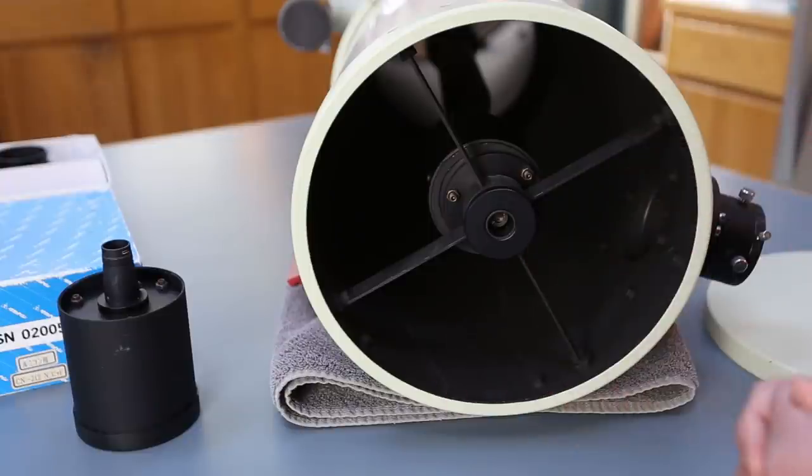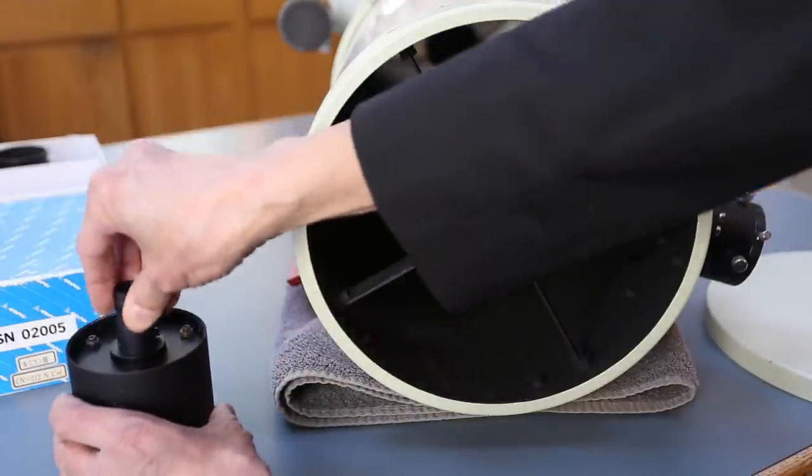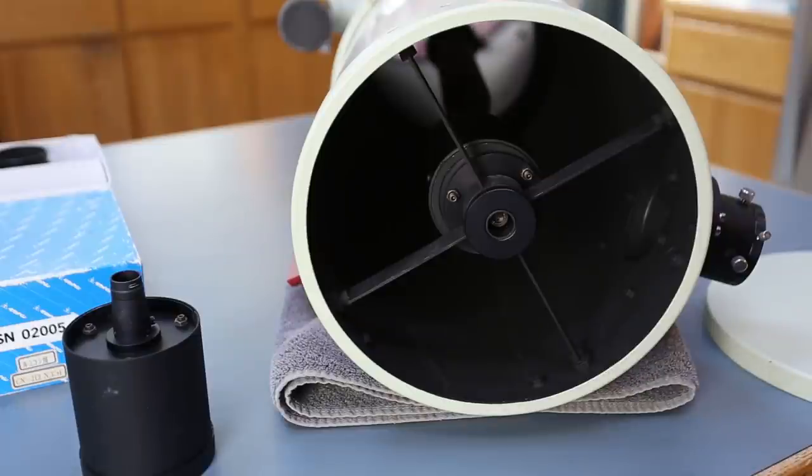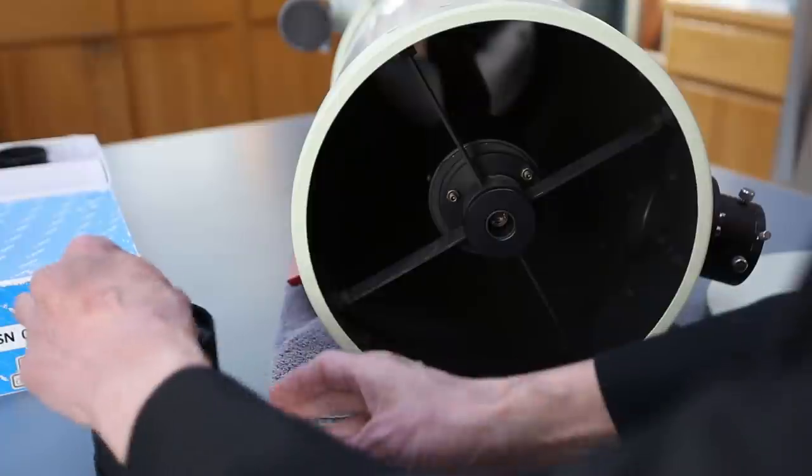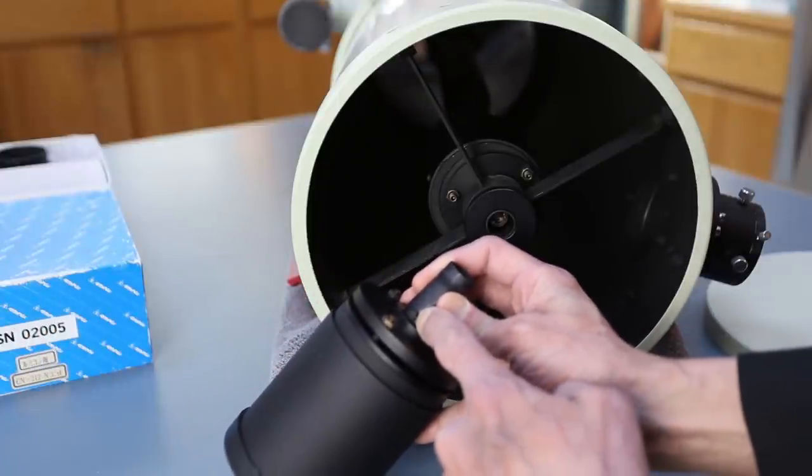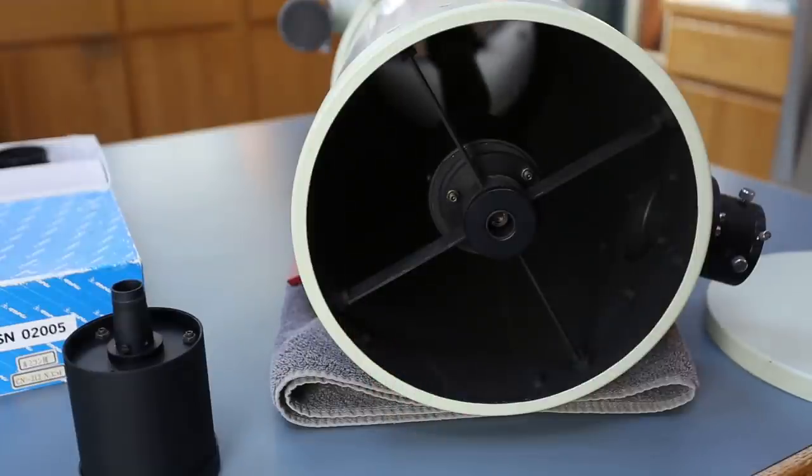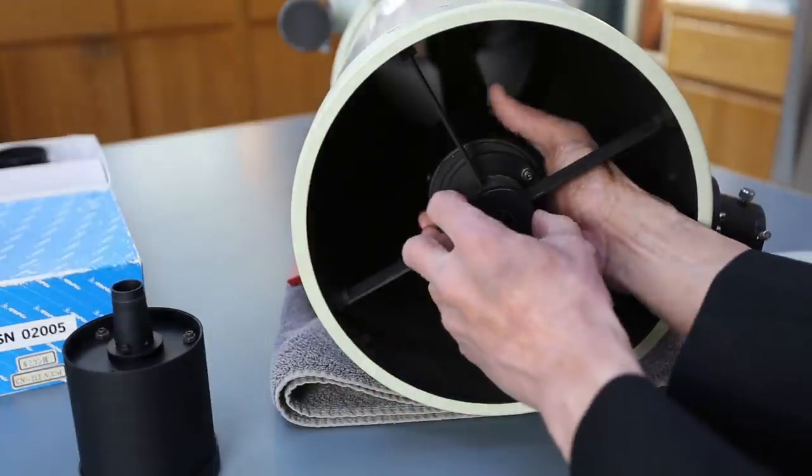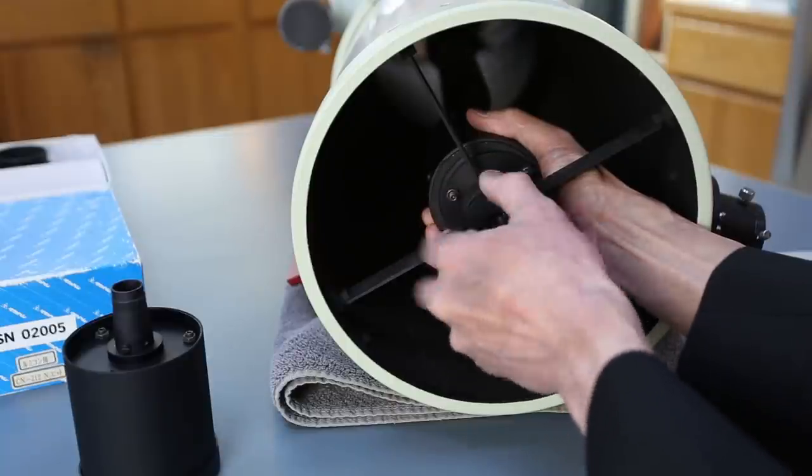So right now it's in Newtonian mode, that's the Newtonian secondary. This is the cassegrain secondary and they've given you a nice little holder here so you can put that in there. But there's a knurled knob here and I don't know if you can see this but there's a little key right here and that key fits into a slot on this side. So what you do, loosen the knurled knob like this,